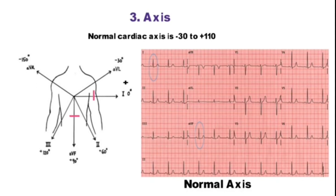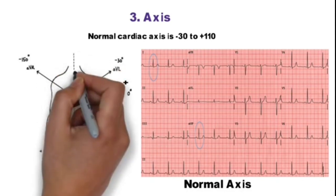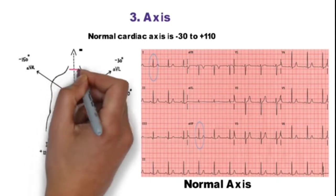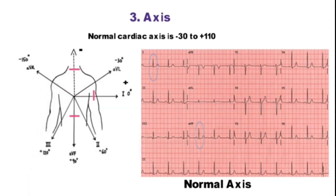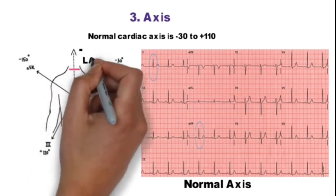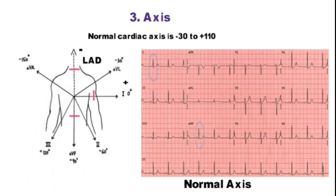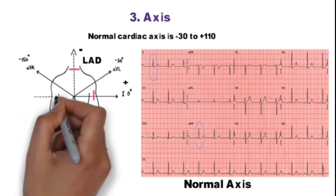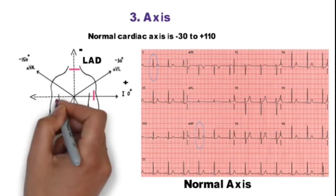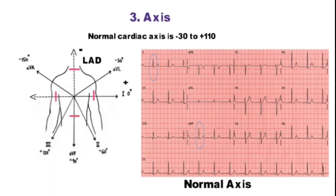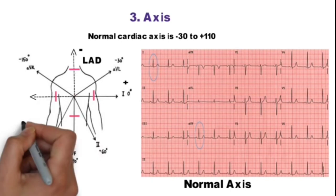If net QRS is positive in lead 1 and negative in AVF, net vector will be in left axis deviation range. If QRS is negative in lead 1 and positive in AVF, net vector will be in right axis deviation range.